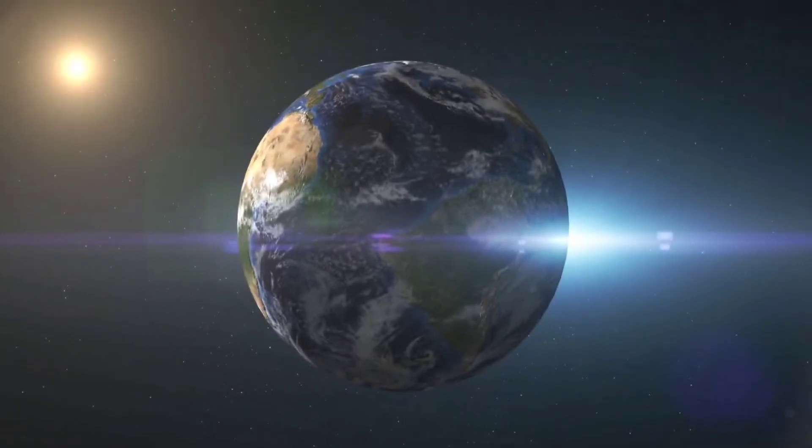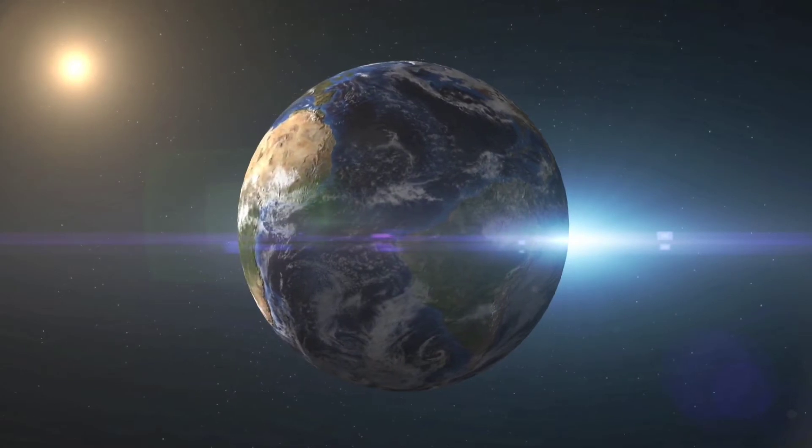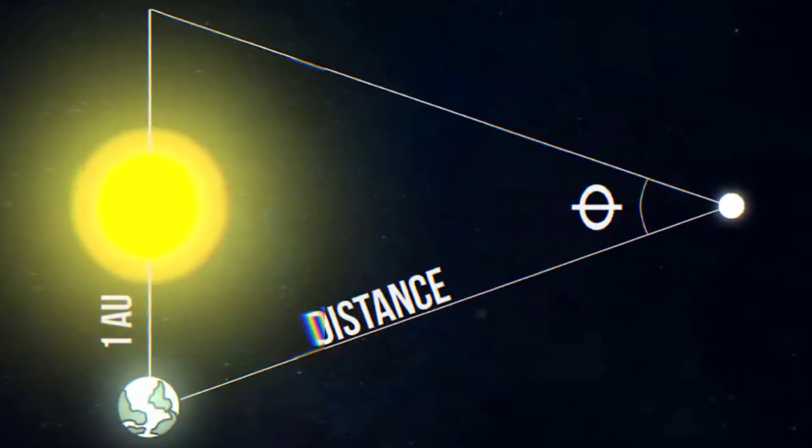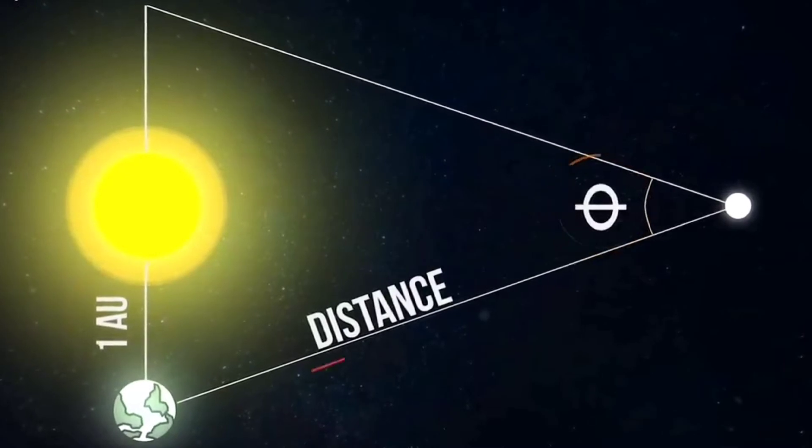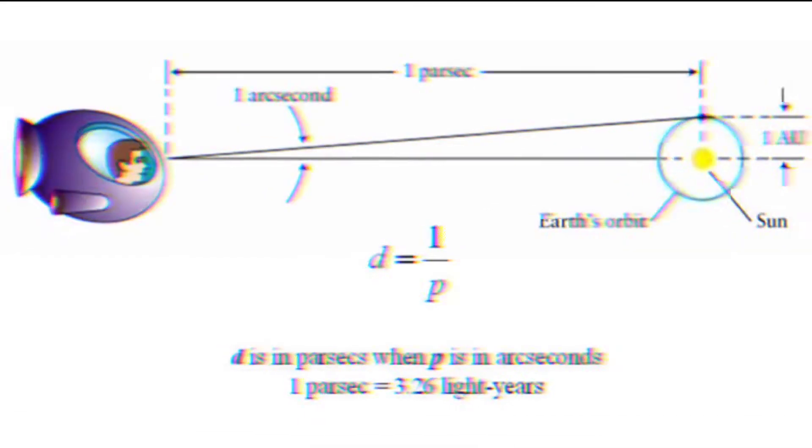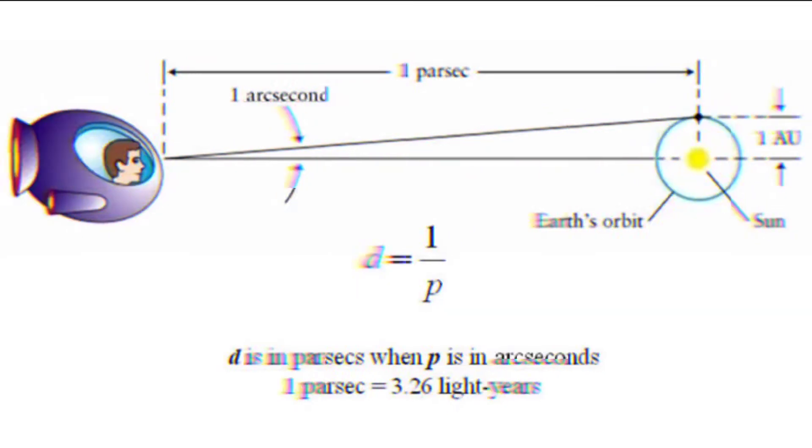How large is a parsec? Parsec is a form of the astronomical unit. 1 AU is the average distance between the sun and the earth, roughly 150 million kilometers. So a parsec is the longest side of a triangle, with 1 AU as its shortest side, subtending an angle of 1 arc second at the opposite vertex. On further calculations, 1 parsec will equal 3.26 light years.